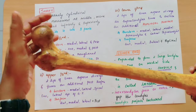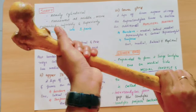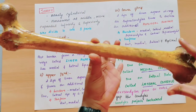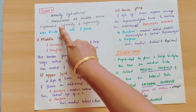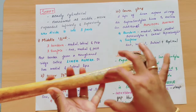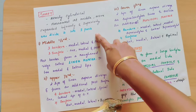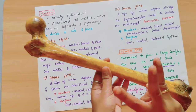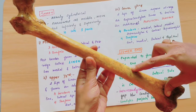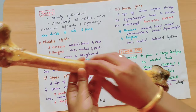Now coming to the shaft of the femur. The shaft is nearly cylindrical, slightly narrower in the middle and more expanded both inferiorly and superiorly. We divide the shaft into 3 parts: upper one third, middle one third, and lower one third.